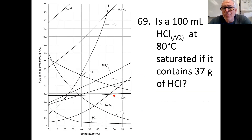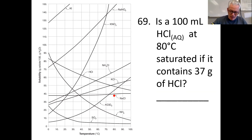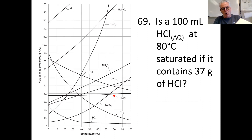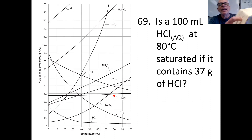Is a 100 mL solution of HCl at 80 degrees saturated if it contains 37 grams of HCl? Let me get out my table G. I'll find 80 degrees, find my HCl line, and it looks like it should be able to hold 48 grams. Now if it only contains 37 grams...